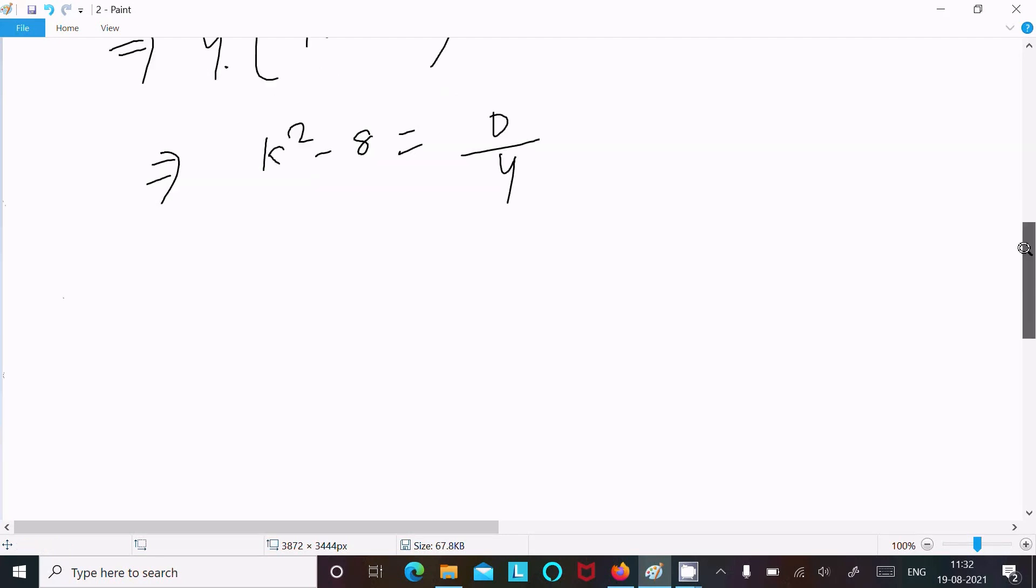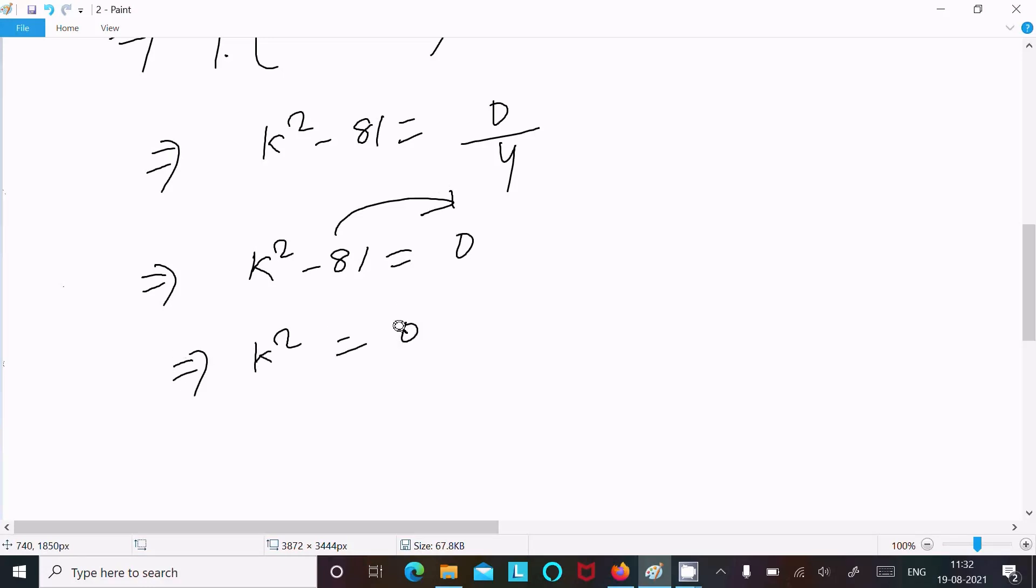We can write k² = 0 plus 81, or k² = 81. Now k = √81, so it has two values: plus minus 9.